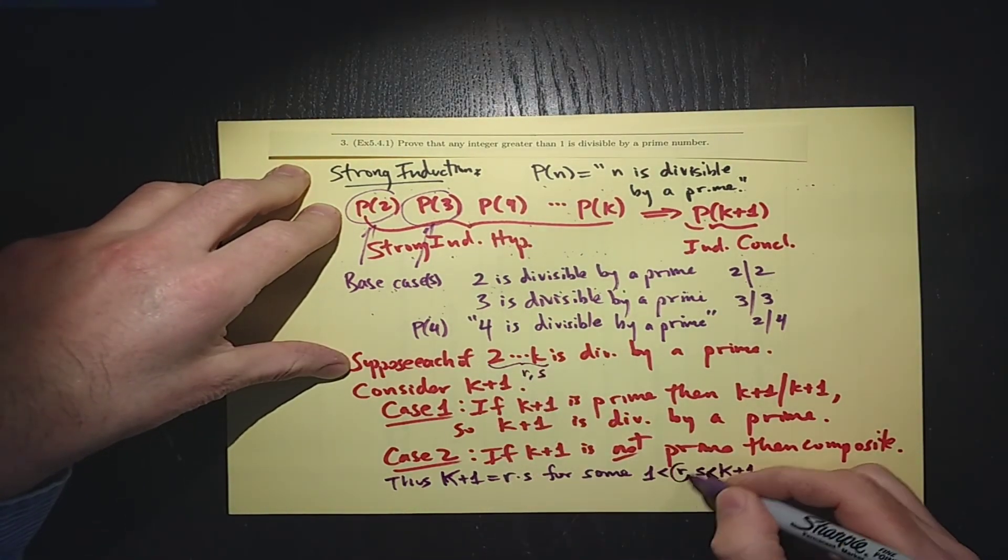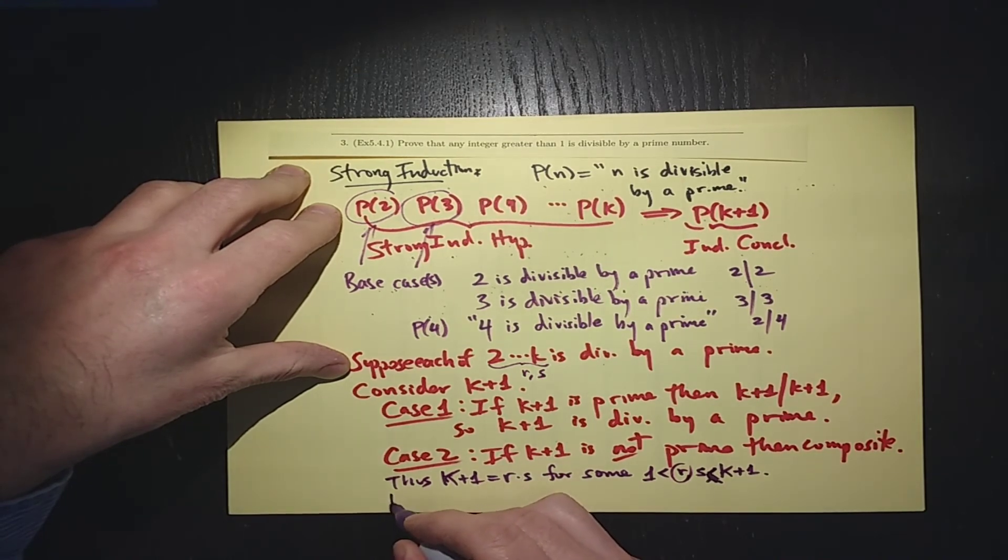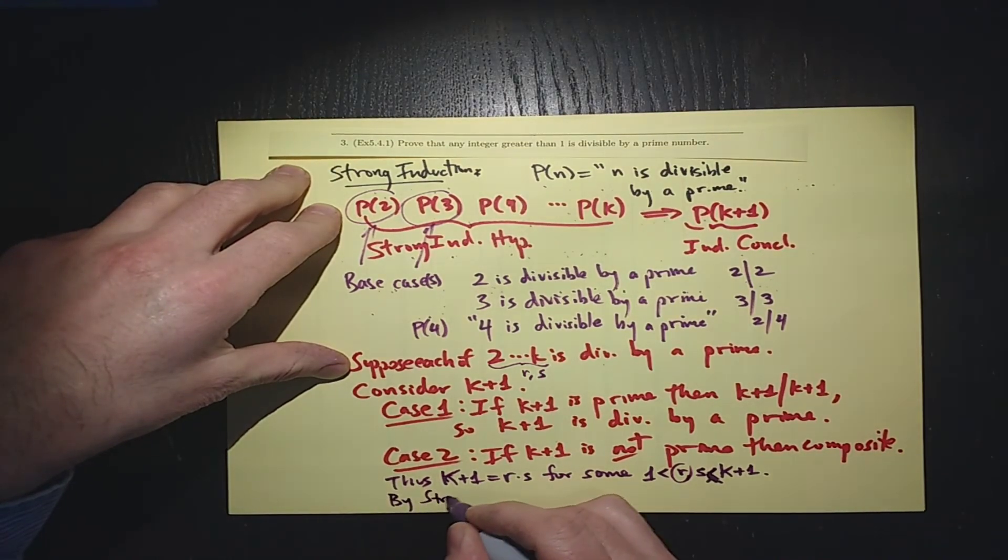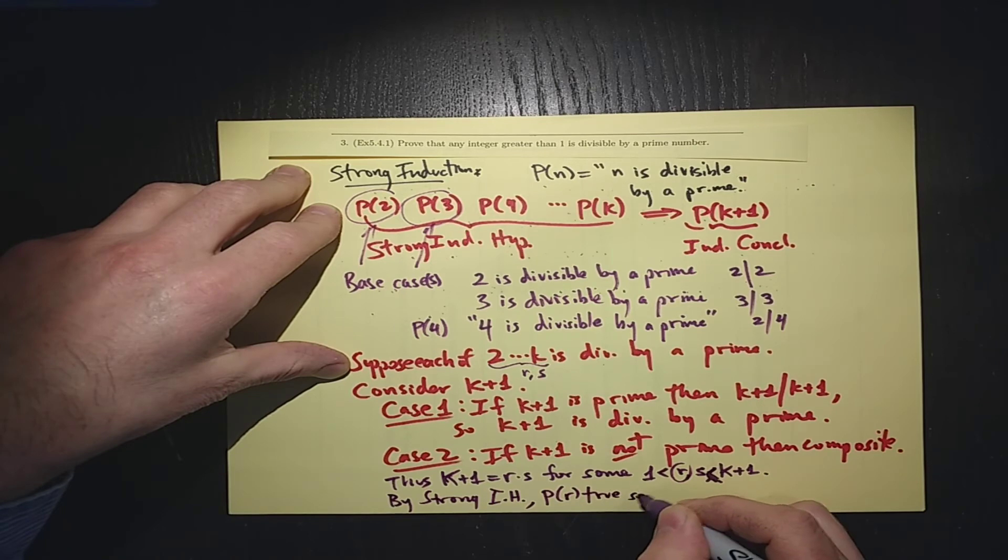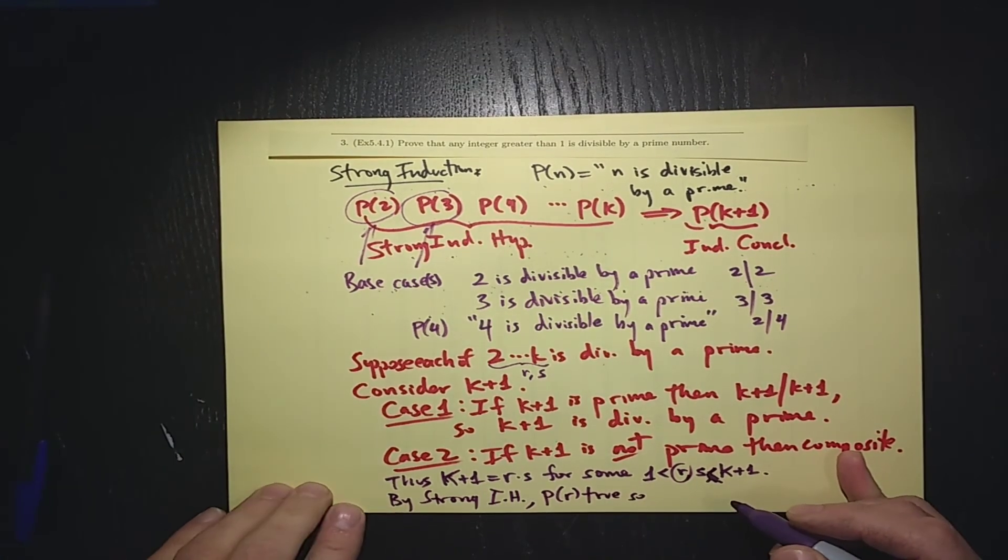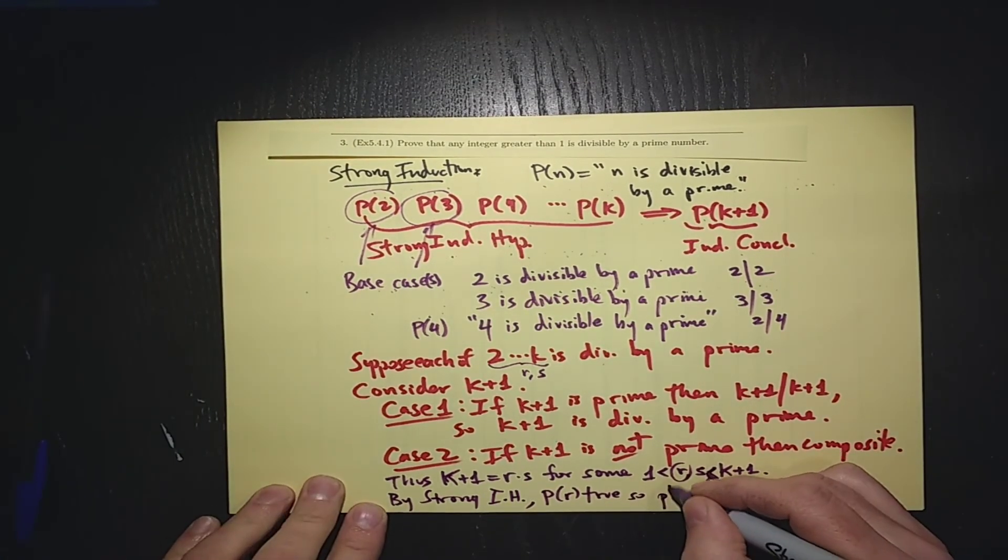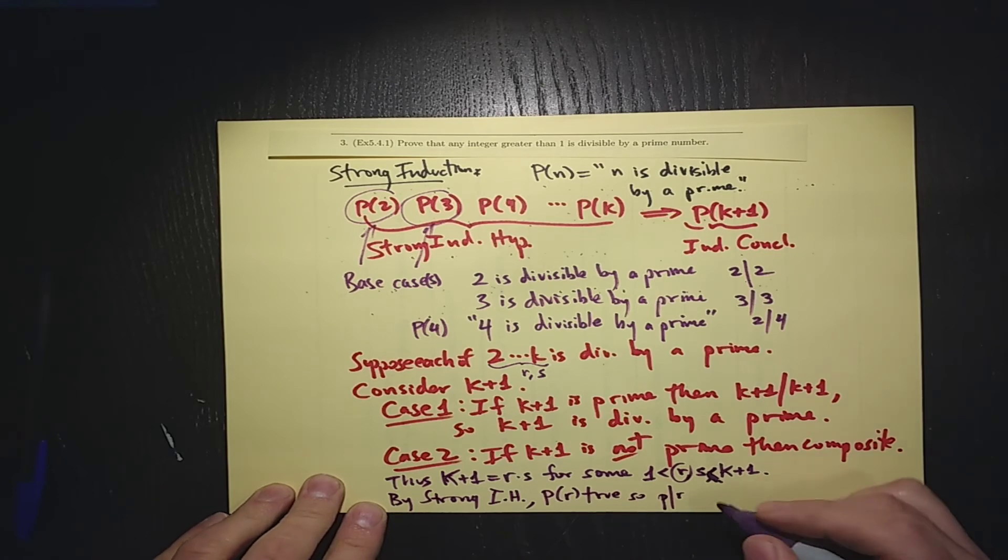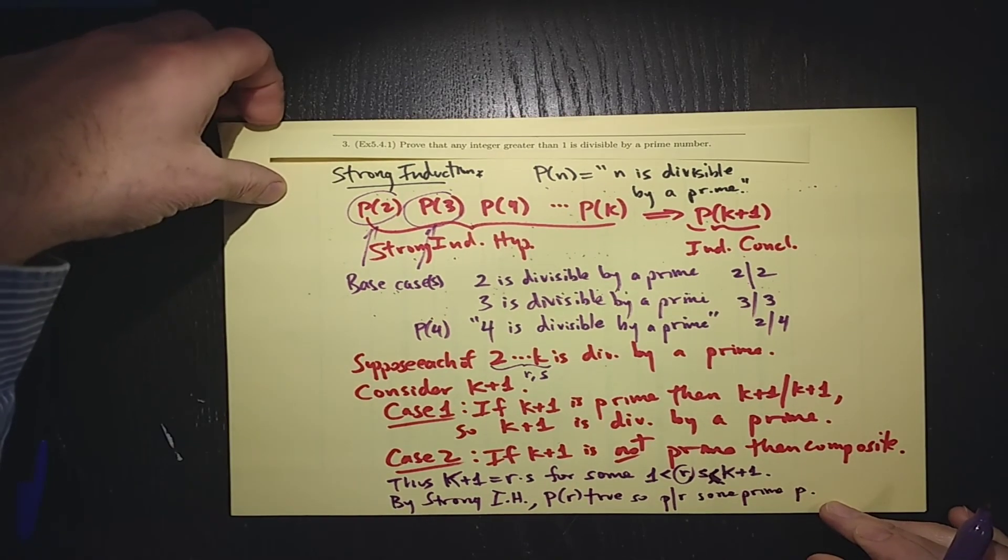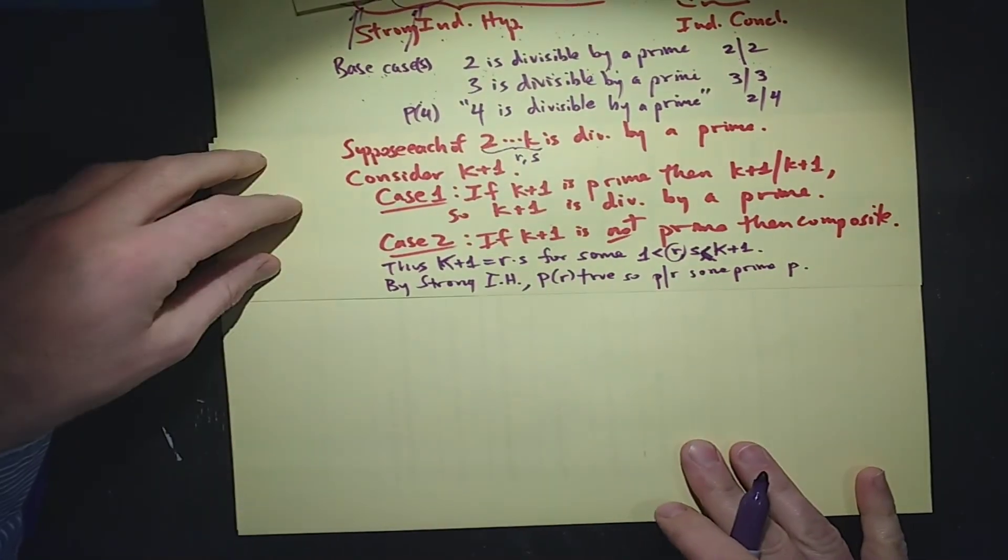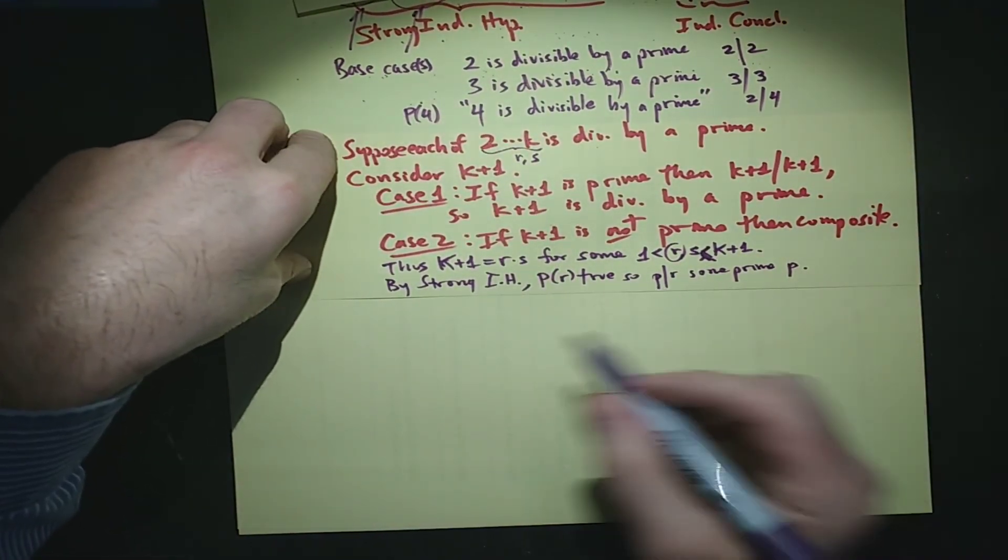So let's just look at r. By the strong induction hypothesis, P(r) is true. So there's some prime p, p is divisible by r, some prime p. And it looks like we need a little bit more room. Let's slide this up. p is divisible by r for some prime p.